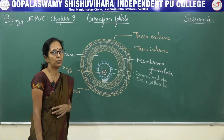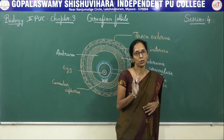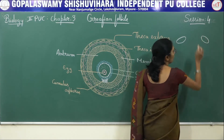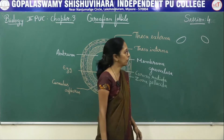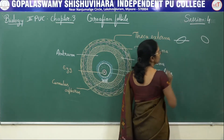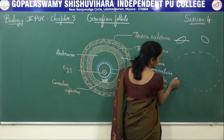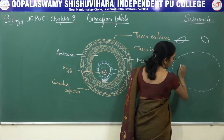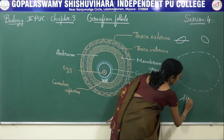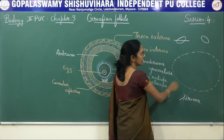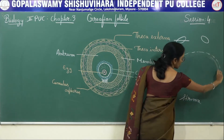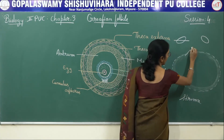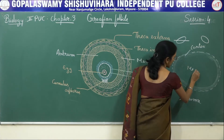Before entering into the graafian follicle, you need to understand the transverse section of the ovary. There is a presence of 2 ovaries in the abdomen region, on either side. When we take the transverse section of the ovary and observe under the microscope, it is almost oval in shape and it encloses a liquid part. This liquid part is said to be stroma, and the stroma is differentiated into the outermost peripheral region, which is said to be cortex, and the inner part is the medulla.